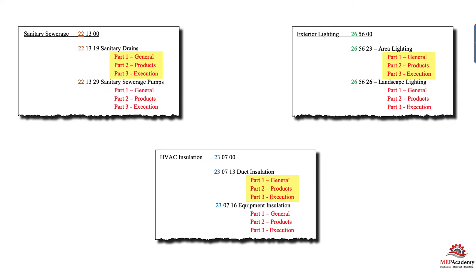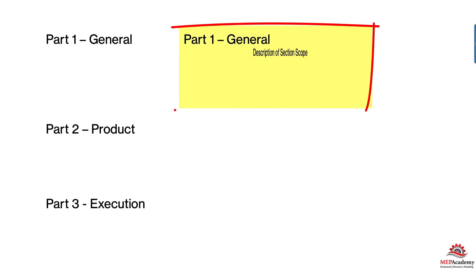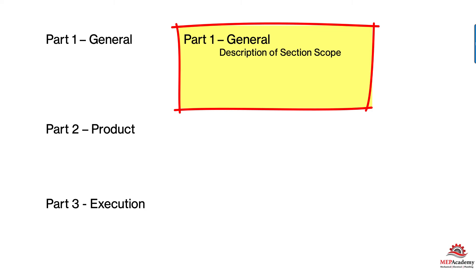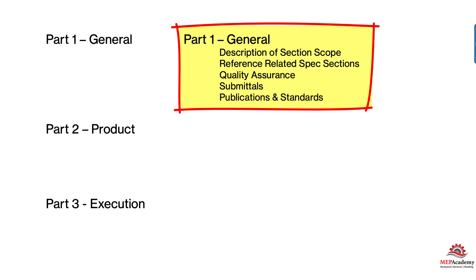After you have those categories, within each category you'll have three parts — Part 1, Part 2, and Part 3. These three parts are the same in every division and every category. Part 1 is General, and it gives a description of that section of the scope. It references any related spec sections — within your division or outside of it — as well as Quality Assurance, Submittal Requirements, and Publications and Standards. This gets repeated in each division category.